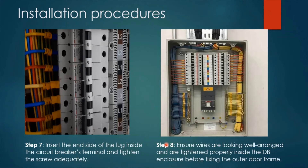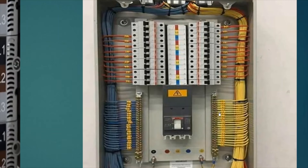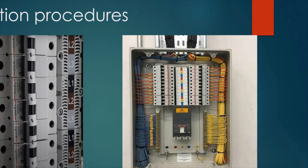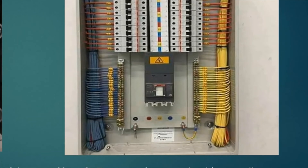Step eight is to ensure wires are neatly arranged and tightened properly inside the distribution board enclosure before fixing or installing the outer door frame. As you can see, the yellow and green wires representing the earthing wires are all terminated at the earthing terminal, and the neutral wires are terminated at the other side. Different colored wires for the circuit breakers go to different circuit numbers. The incomer can be terminated from the upper side or through an opening at the bottom side of the DB enclosure, which is more suitable.